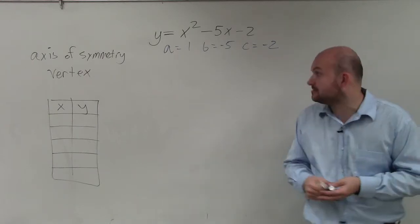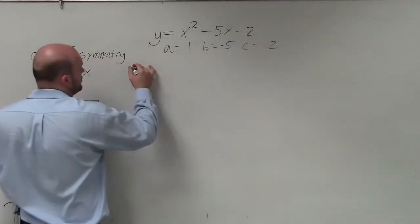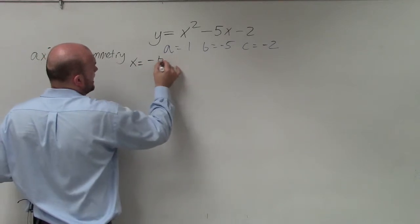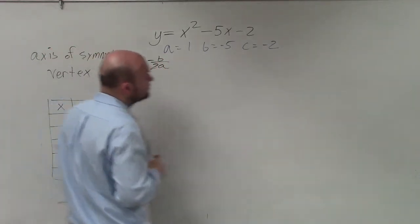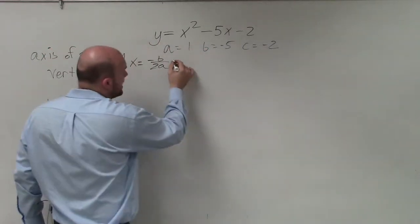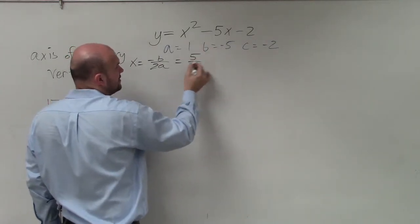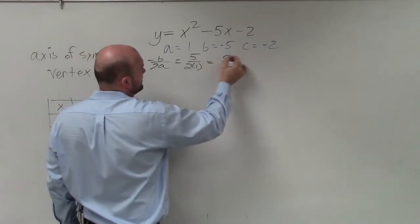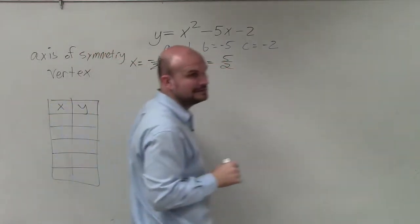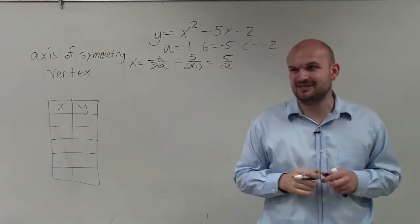So now we need to identify the axis of symmetry. If you guys remember, the axis of symmetry, the formula for that was x equals opposite of b divided by 2a. So now, all we're simply going to do is plug in the opposite of b. Well, if b is negative 5, the opposite of that would be positive 5 over 2 times a, which is 1. So therefore, I have 5 halves. Not very good. That's a fraction.